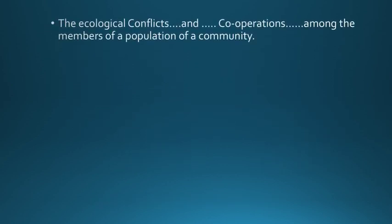There are ecological conflicts and cooperations among the members of a population of a community. For example, a group of deer may have conflicts with each other for food, for mate, for shelter. But they are also exhibiting different types of cooperations among themselves — they stay together in a herd and travel together. Such conflicts and cooperations are always present in the members of a population of a community.